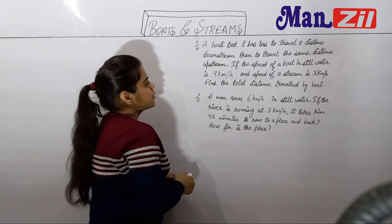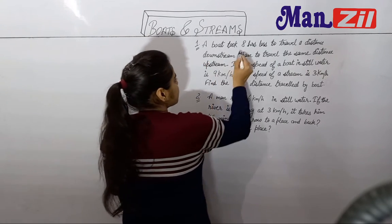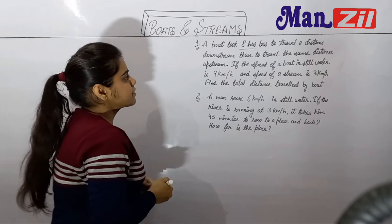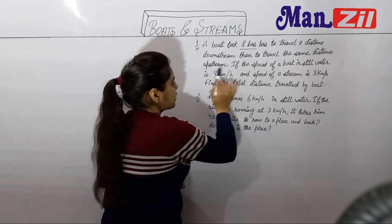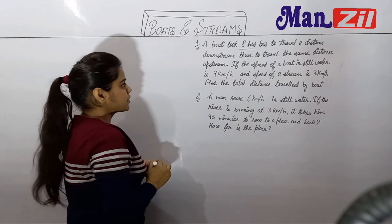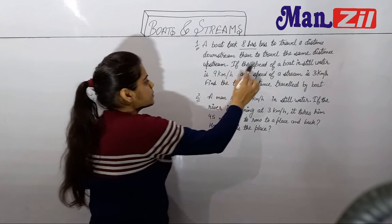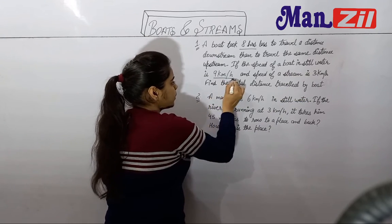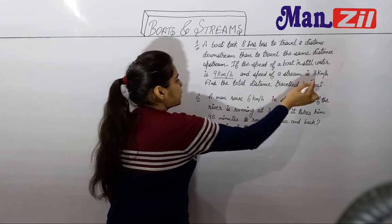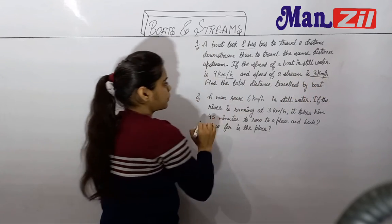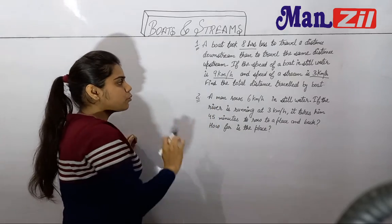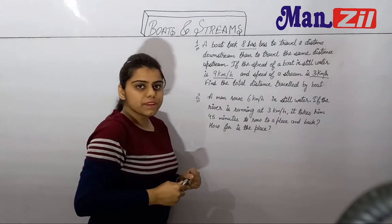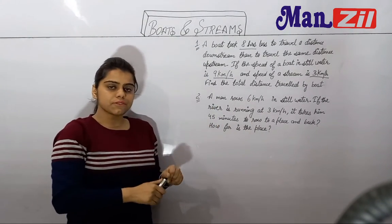Our first question: a boat took 8 hours less to travel a distance downstream than to travel the same distance upstream. The speed of the boat in still water is 9 km per hour and the speed of the stream is 3 km per hour. Find the total distance travelled by the boat. Generally students use equations to solve this question.